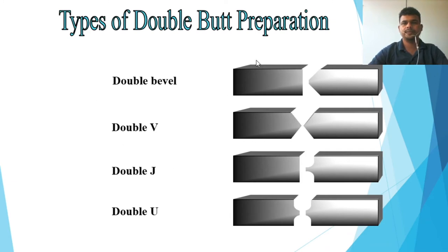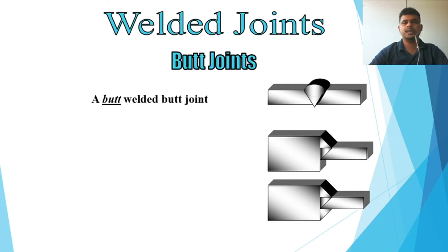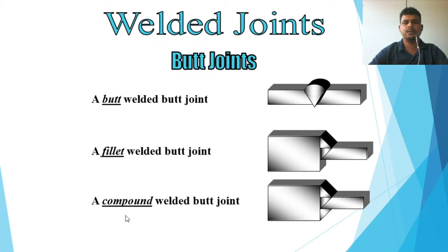I hope you understand what was covered. Up to now we've seen the types of weld. Now we discuss types of weld joints — butt joint, which includes the butt weld butt joint, fillet weld butt joint, and compound weld butt joint.